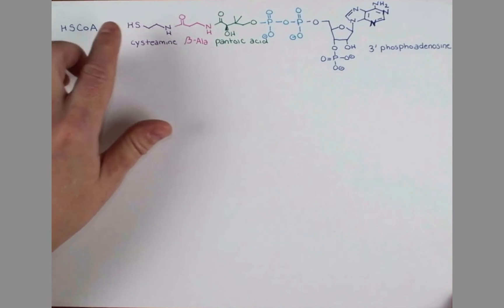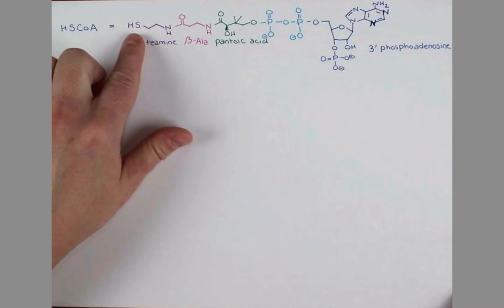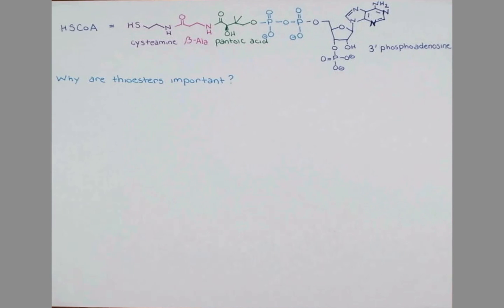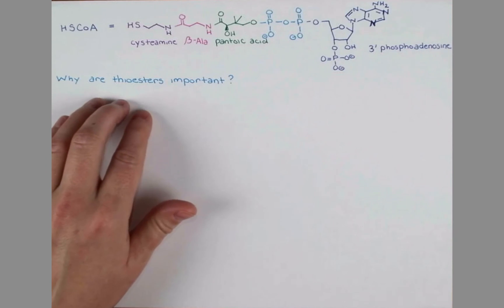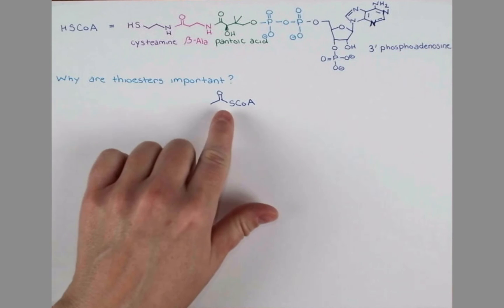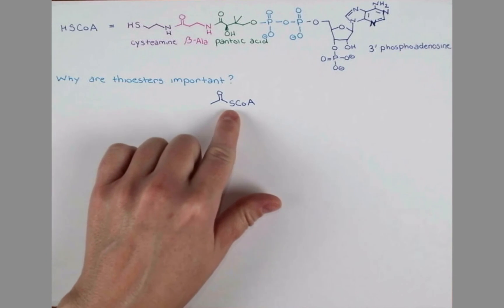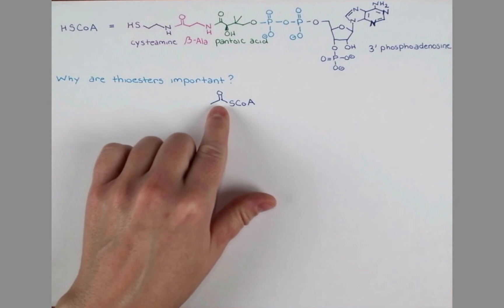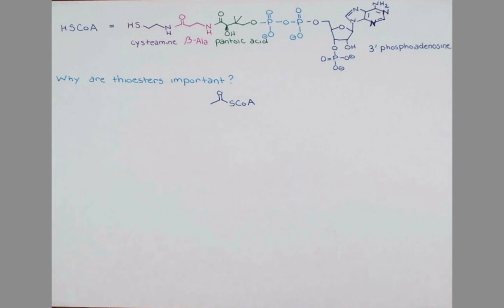When coenzyme A covalently bonds to a molecule via this sulfur, it makes a thioester bond. So we need to discuss why thioesters are important in biochemistry. Here's our coenzyme A ester. This sulfur adjacent to a carbonyl is the thioester. And we can get at why this is important if we compare it to a carboxylic acid.